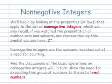We'll begin by looking at the properties or laws that apply to the set of non-negative integers, which as you may recall if you watched the presentation on number sets and subsets, are represented by this symbol, the capital letter Z with an asterisk. Non-negative integers are the numbers invented out of a need for counting, and the discussions of the basic operations on non-negative integers will, in turn, show the need for expanding this group of numbers to the set of real numbers.